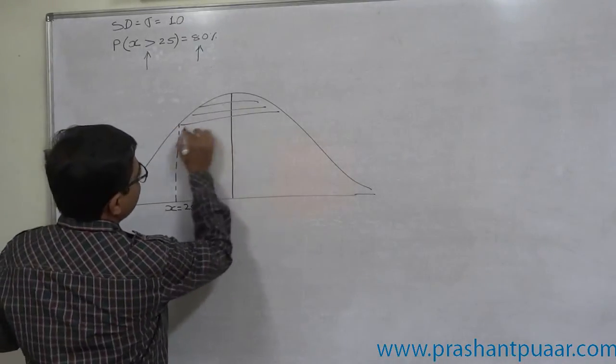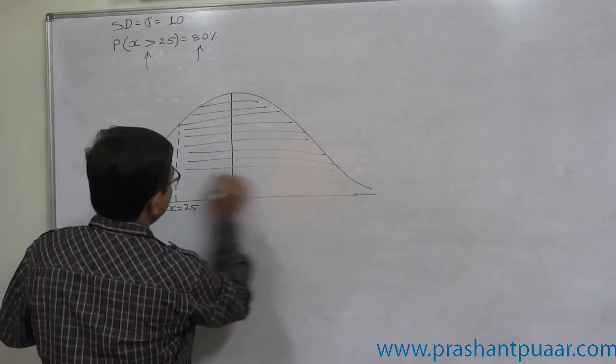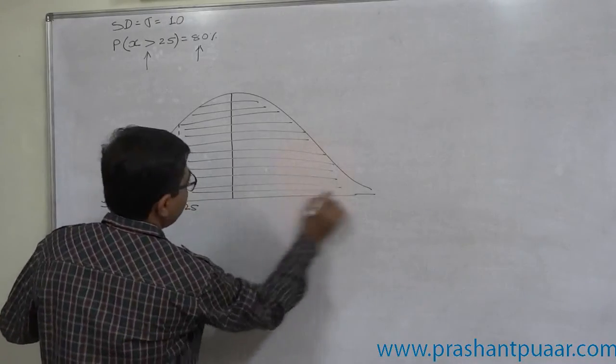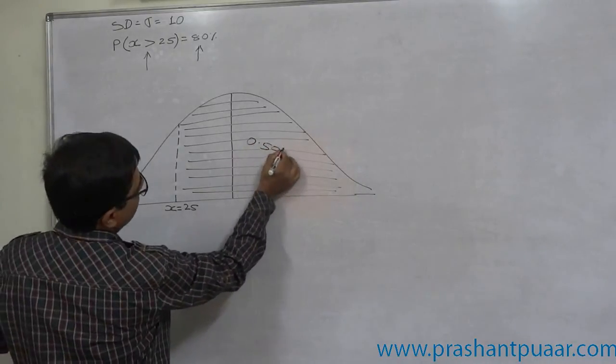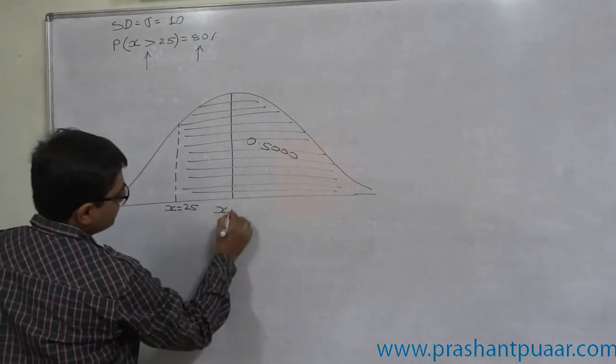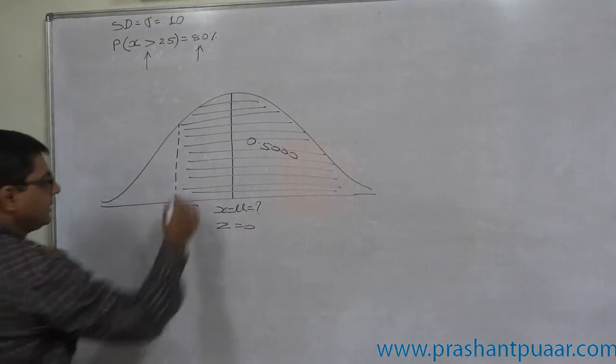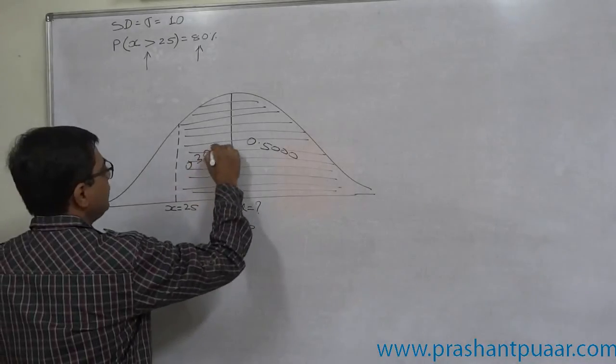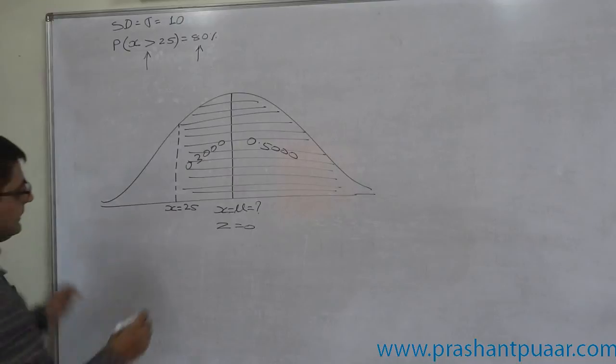This is our area of interest. Total area is, we know, 80% or 0.8. That can be divided into two parts: 0.5 where x takes value greater than mean, and 0.3 where x takes value between 25 and mean. 0.845.